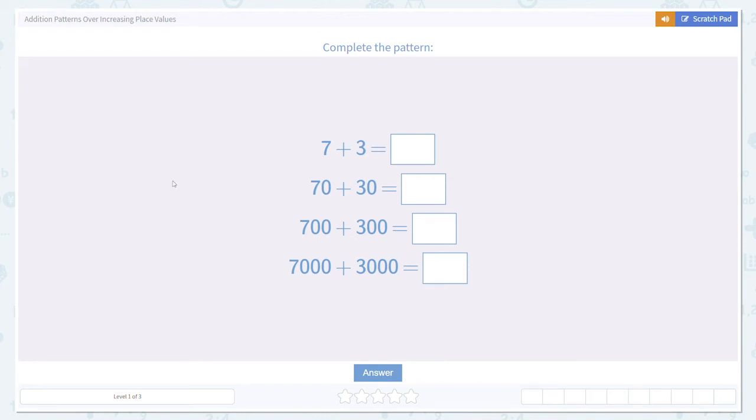Today we're going to talk about addition patterns over increasing place values. What does that even mean? Let's look at some examples and maybe it'll be clearer.